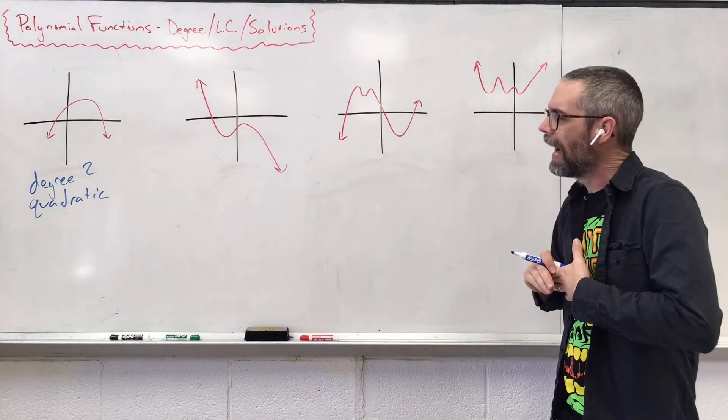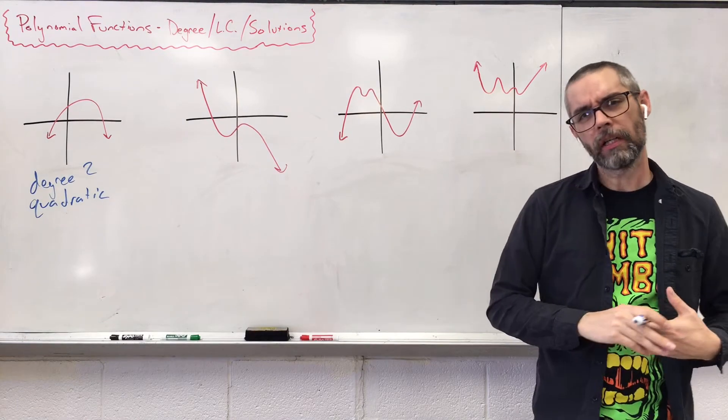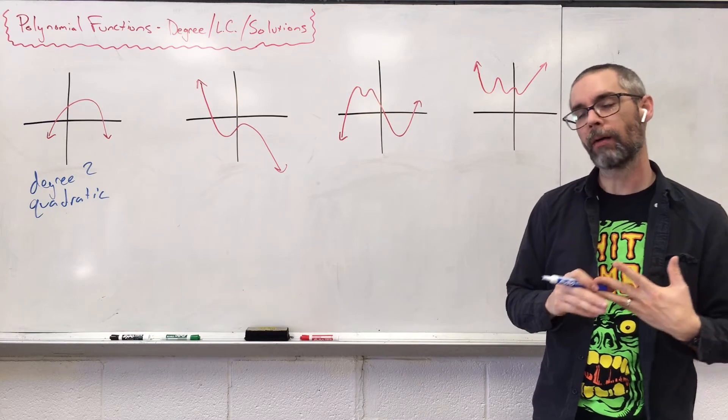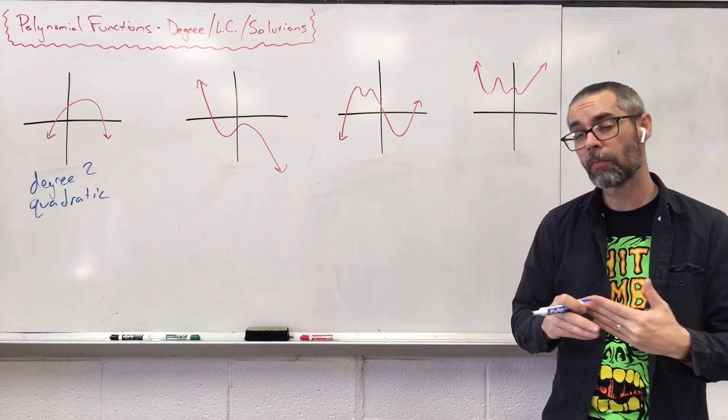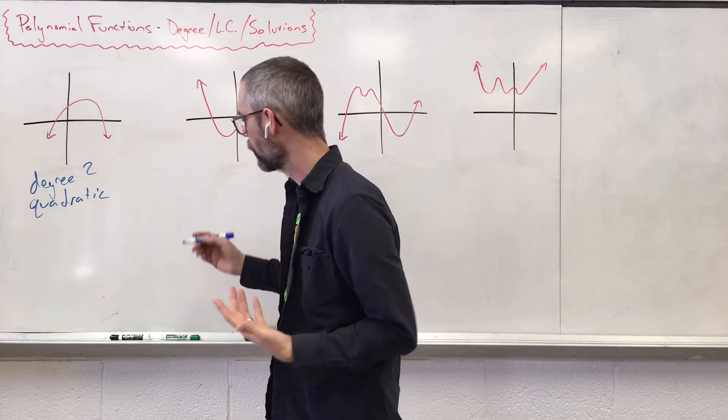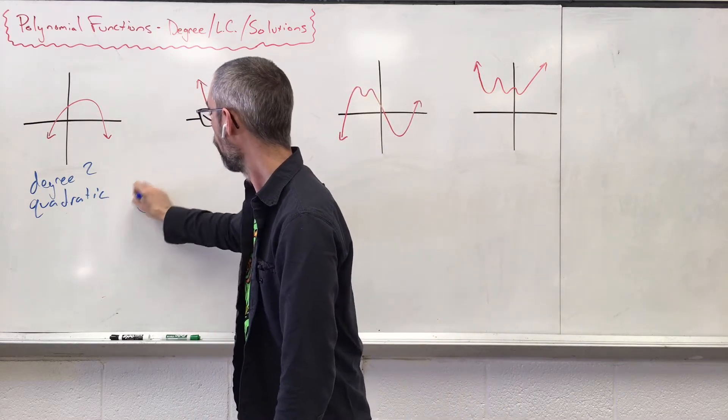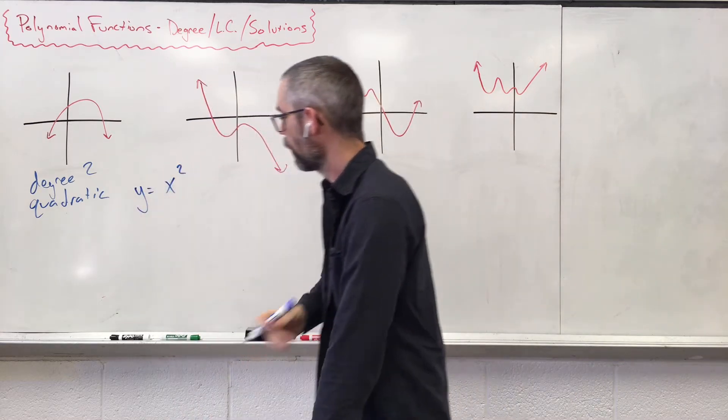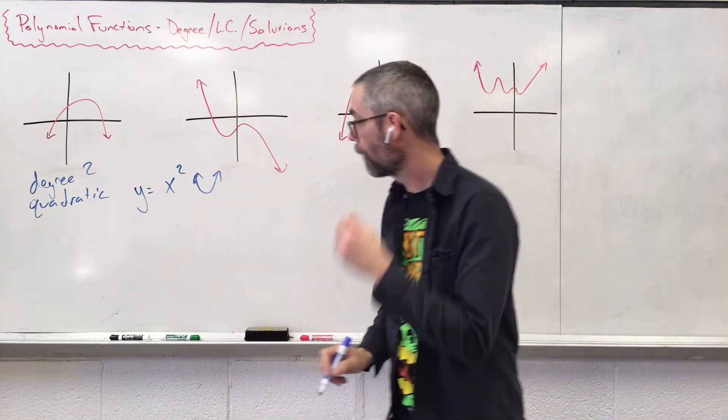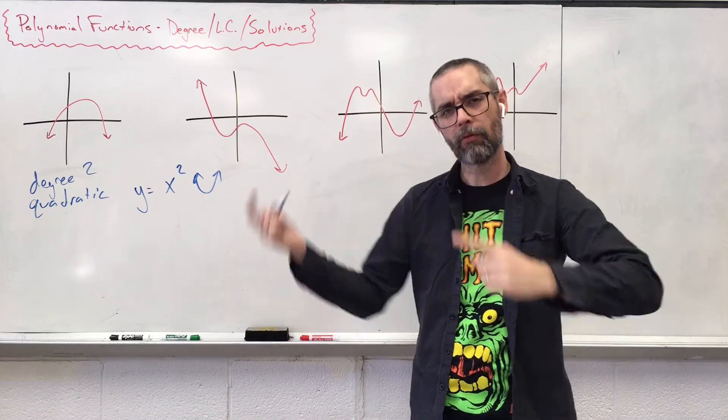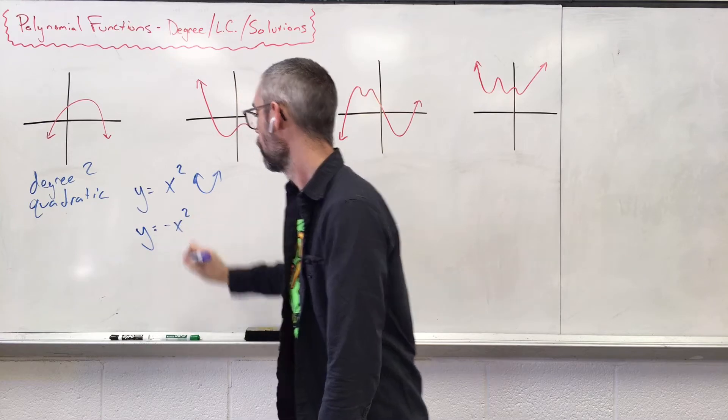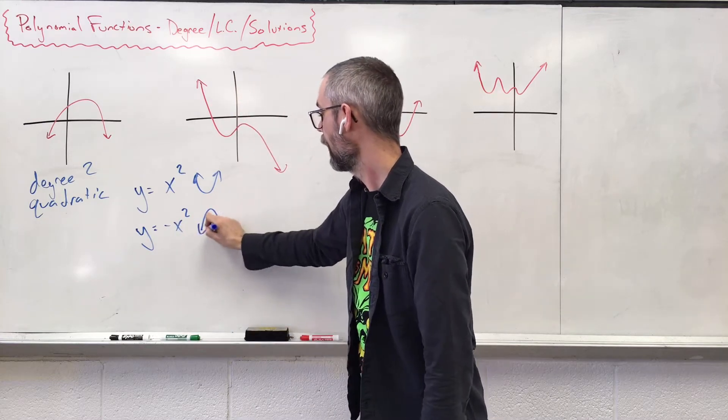Now, leading coefficient. I want to know whether or not the leading coefficient of this problem is either going to be positive or negative. For example, if I have y equals x squared, something with an x squared is going to give us that parabola. How could I make that parabola turn upside down? Having y equals negative x squared, and that flips that graph right here.